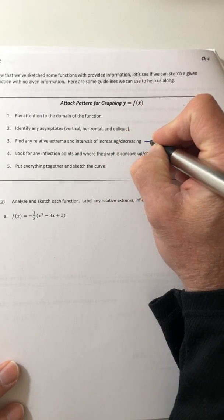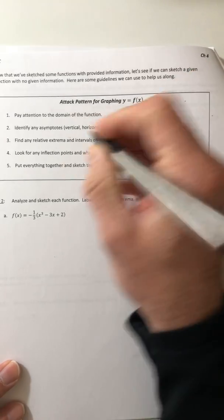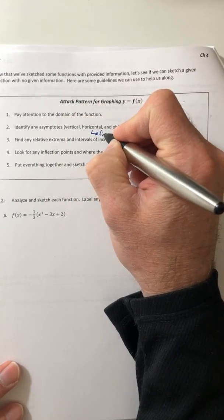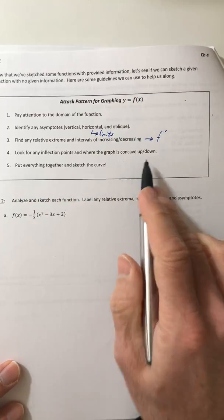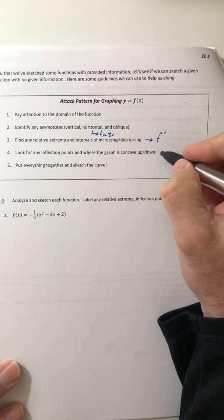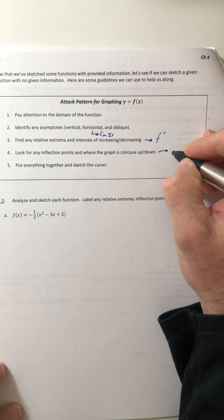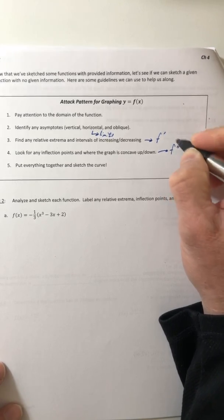So that would be going off the first derivative. Let's see, horizontal, that would be limits. And inflection points in concavity, that would be using, and everybody would say, the second derivative.